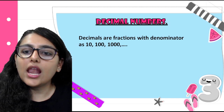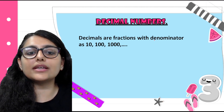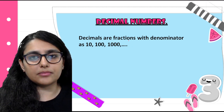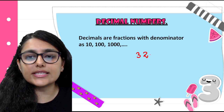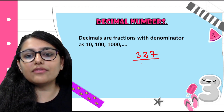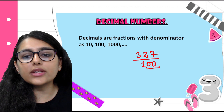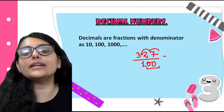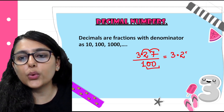Let's talk about Decimal Numbers. Decimals are fractions with denominator as 10, 100, or 1000 — basically numbers with zeros. For example, 327 divided by 100: I count the number of zeros and starting from the right-hand side, I go 1, 2 places and put the decimal. So my answer is 3.27.